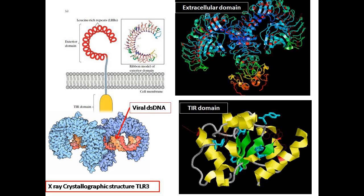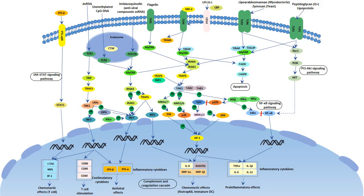Toll-like receptors, which recognize pathogenic microbes and activate antimicrobial defense mechanisms, are found in every life form in the evolutionary tree from insects up to mammals. The major signal transduction pathway that Toll-like receptors engage to activate cells, called the NFκB pathway in mammals, also shows remarkable evolutionary conservation.